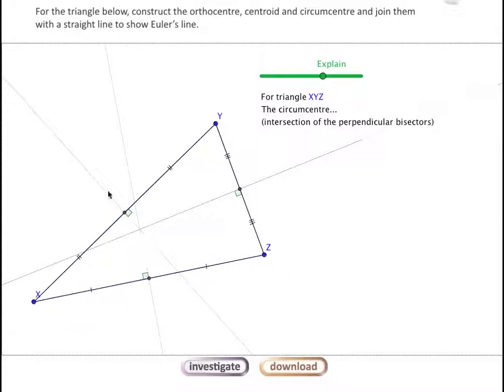We put a right angle line through the midpoint and we find that all of those lines again coincide at a common point, the circumcenter.